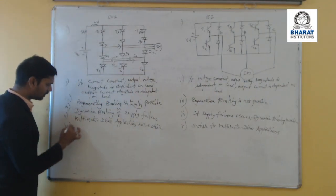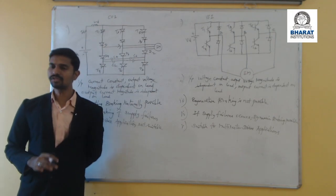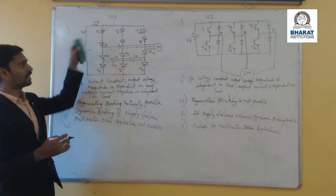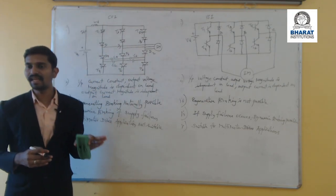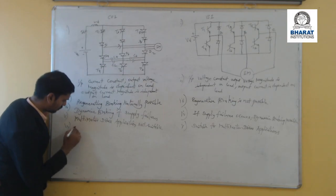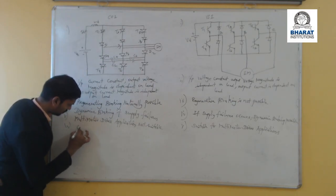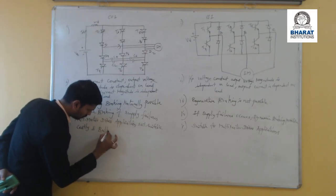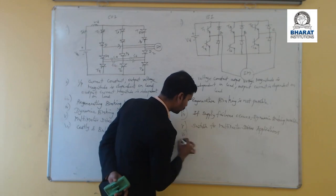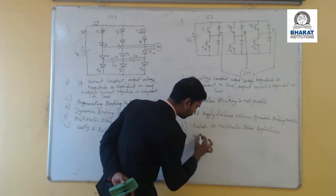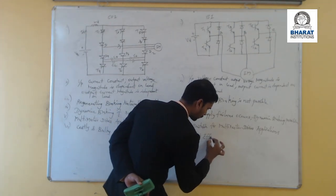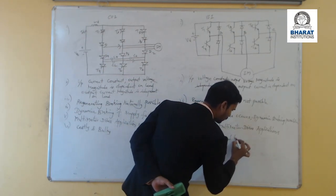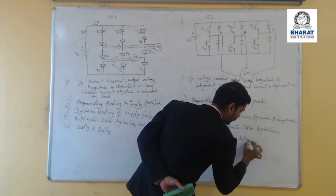The next difference is that due to the capacitors and inductance, the current source inverter is bulky and costly. But the voltage source inverter is cost-effective and less bulky compared to the CSI.